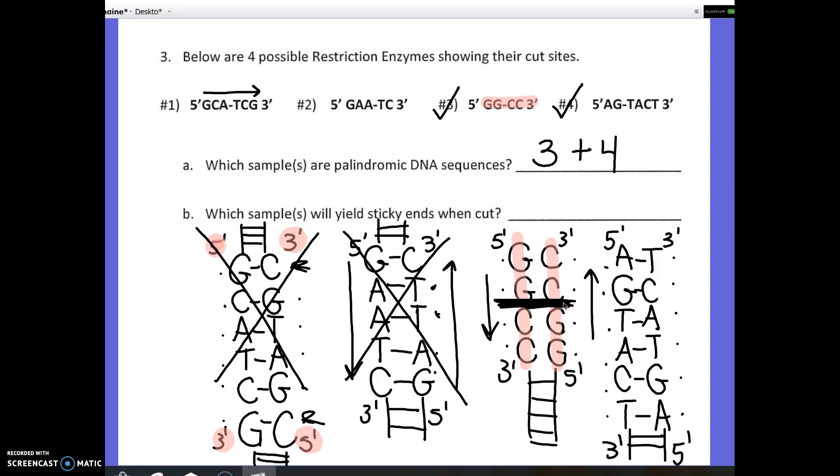If you look at number four, the code is AGTACT. So, the enzyme finds the code and attaches, and it cuts between the G and the T, so right here. Now, the enzyme attaches to the same matching code on the other side, and it cuts between the G and the T, which would be here. This would leave what's called sticky ends. This makes what's called a staggered cut.